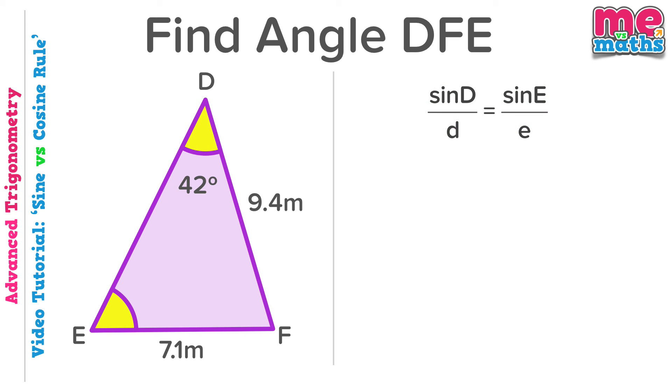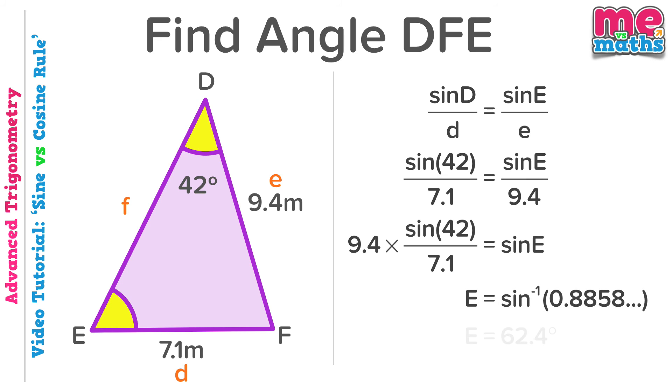So let's find angle DEF using the sine rule. As always, step one, label our sides. We'll keep their letters, so we've swapped the letters in the sine rule that we're going to use. Once we've done that, we have a relatively straightforward sine rule question to solve for our angle, which we'll find to be 62.4 degrees.